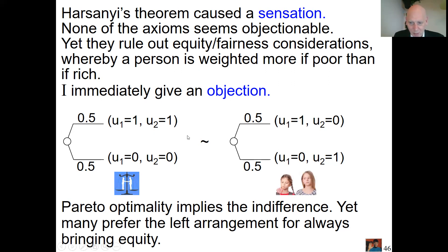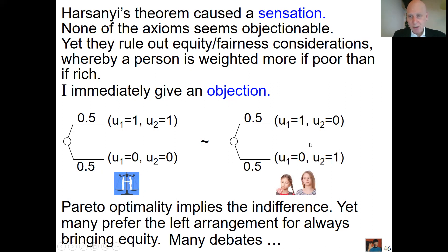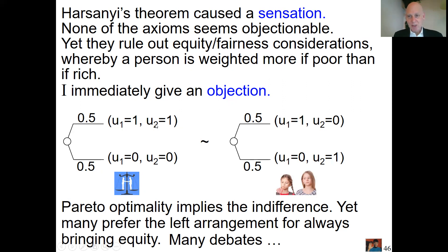Harsanyi could counter this objection: if in the right situation there is inequality and people are unhappy about it, then you have not captured utility correctly — the utilities should be lower there to reflect that unhappiness, so you should incorporate unfairness into your utility function. But critics replied that Harsanyi is using utility in a circular manner: whenever there is a counterexample, he says utility should be redefined. Your utility function apparently needs to capture everything happening everywhere in society, making the model circular and completely intractable.